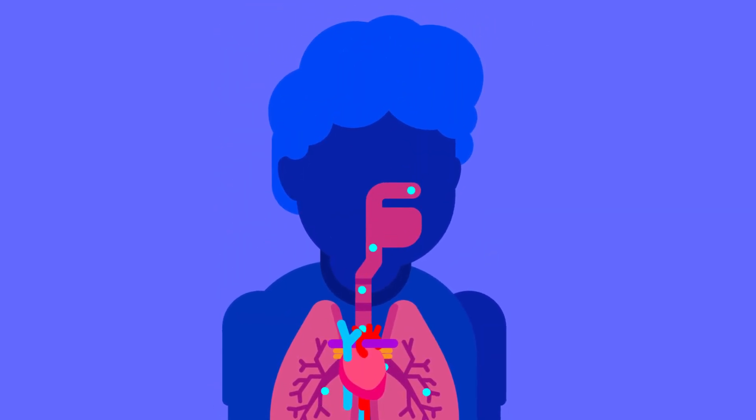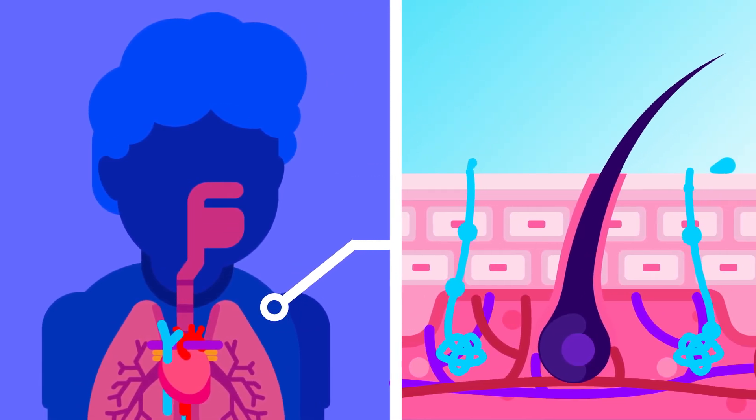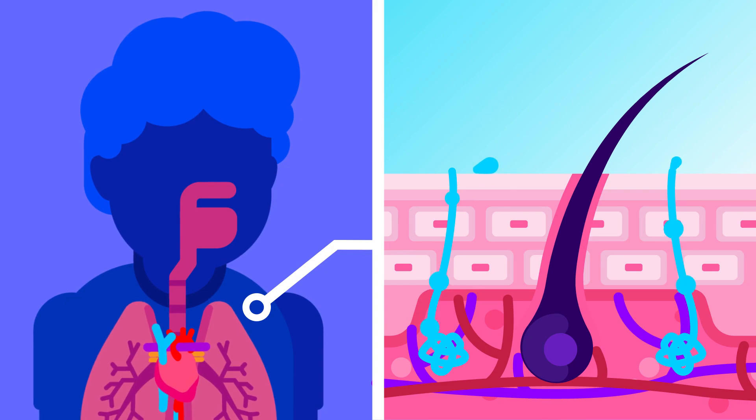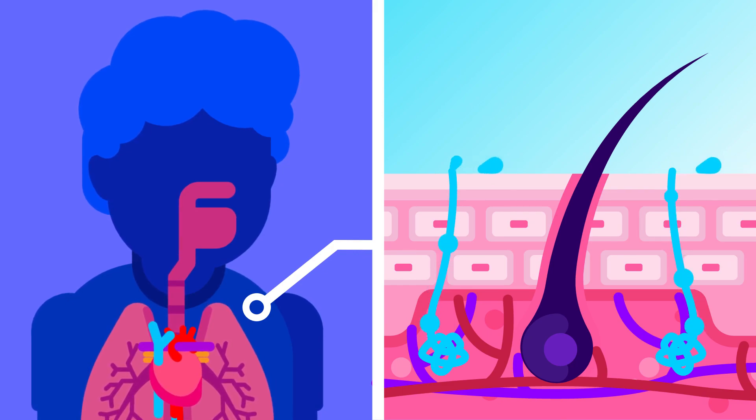The lungs, in the form of exhaled air, excrete carbon dioxide. Our skin, in the form of sweat, eliminates heat, mineral salts, urea, and excess water.